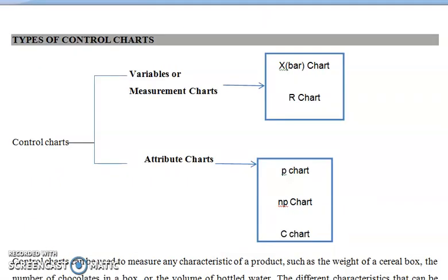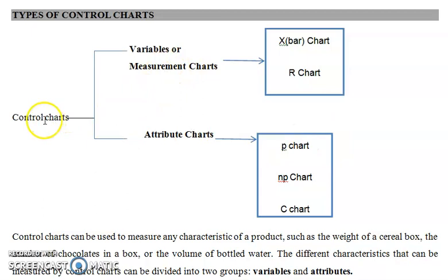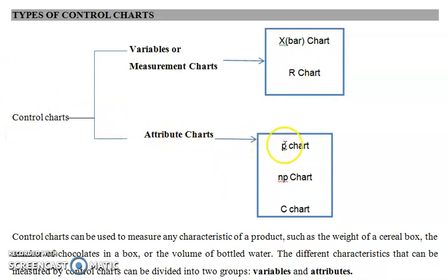The different types of control charts are basically of two types: control charts for variables and control charts for attributes. For variables we plot the x-bar chart (mean chart) and R chart (range chart). For attributes we have the p chart (proportion defective chart), the np chart (number of defectives chart), and the c chart (defects per group).